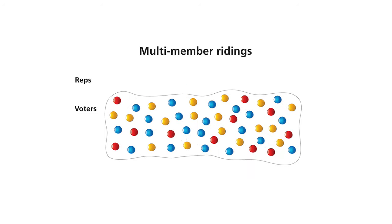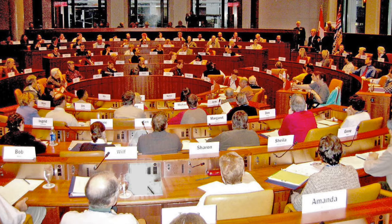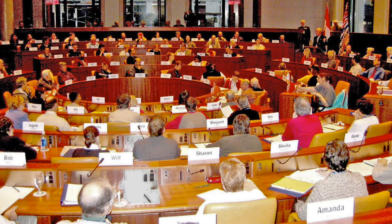With STV, adjacent single-member ridings would be grouped together into larger multi-member ridings. The same election might turn out more representative of the diverse views of actual voters.